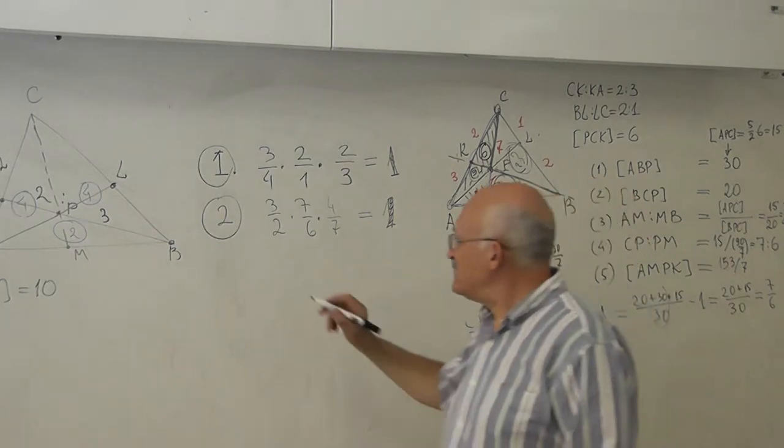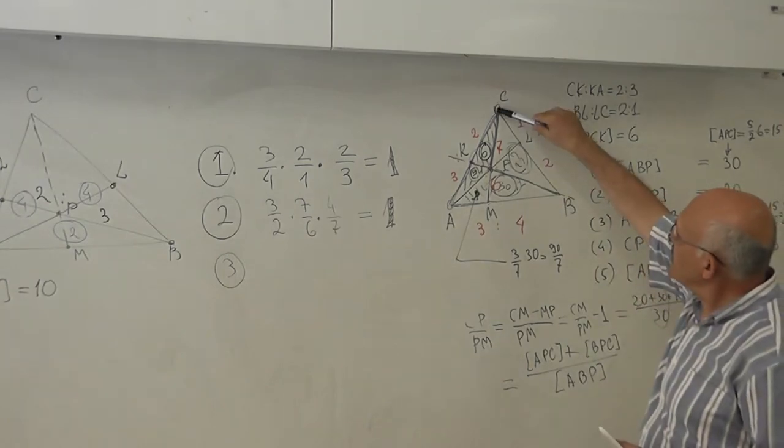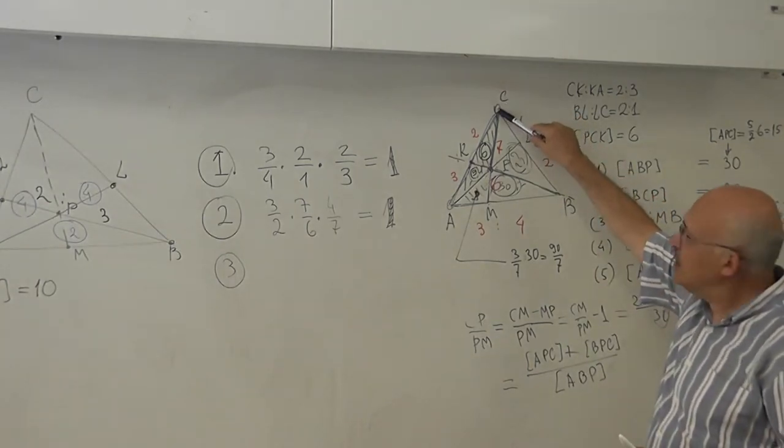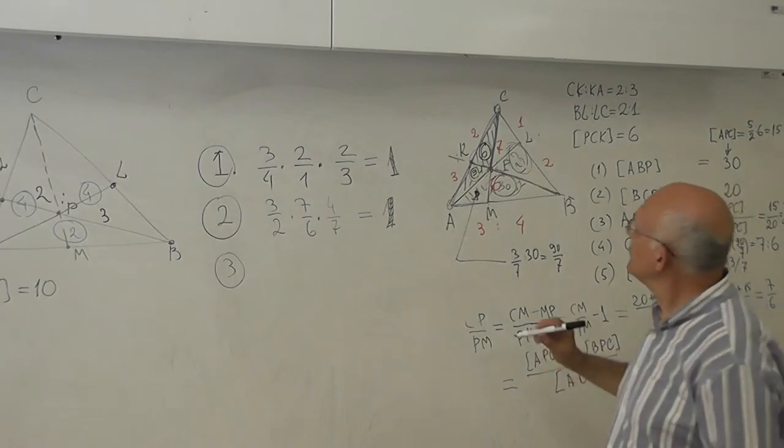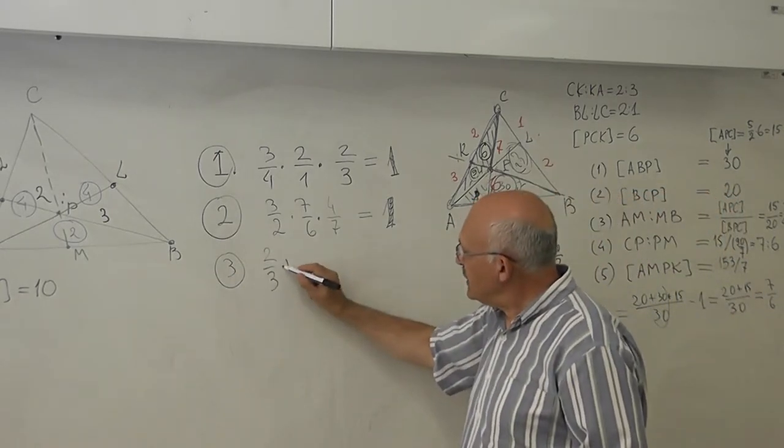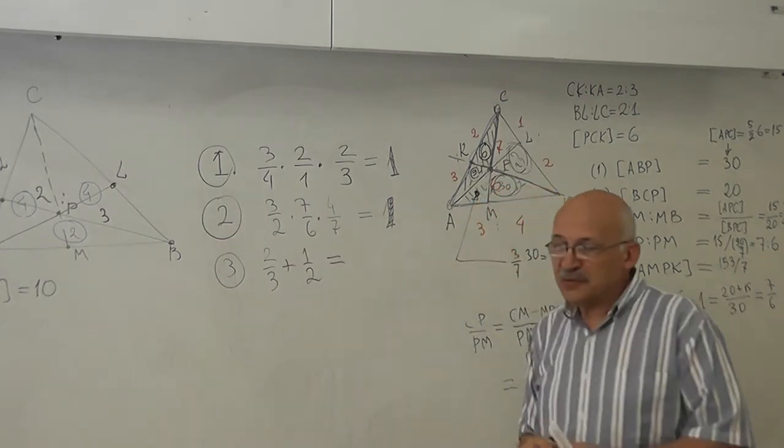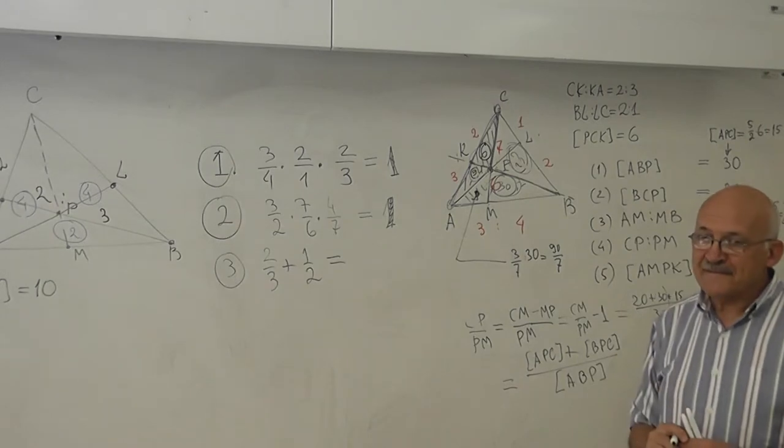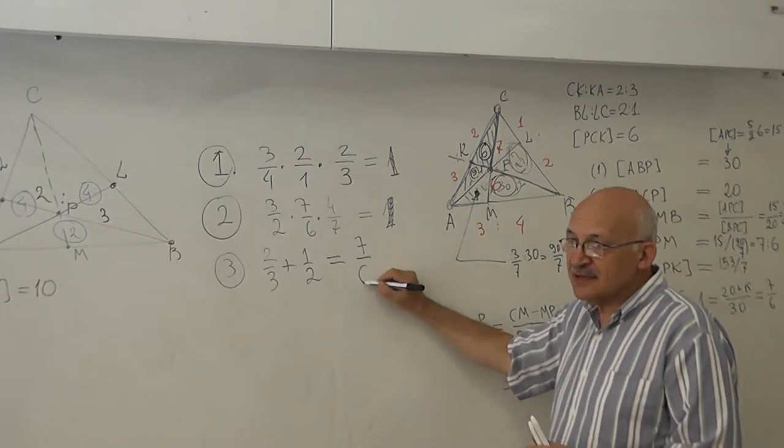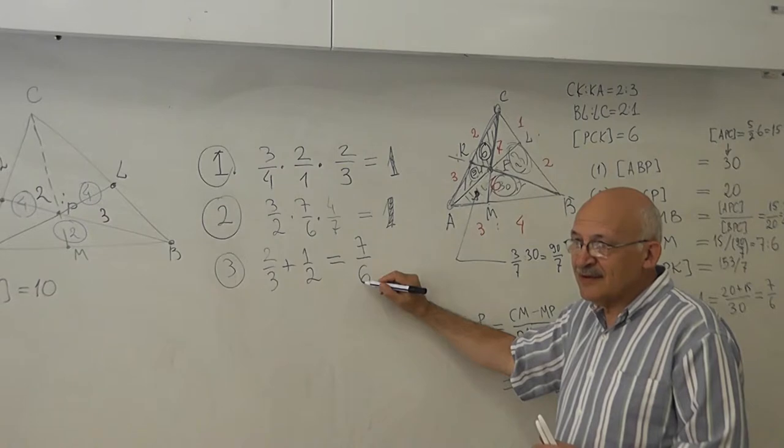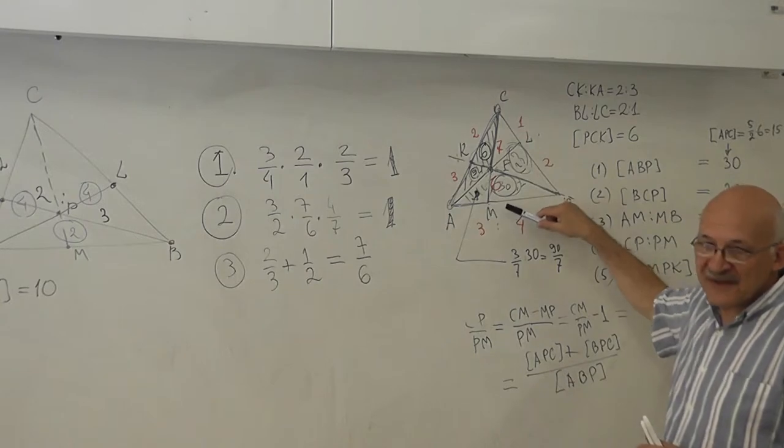Okay. Number three. Trick number three. I take, I take point C, for example. And I will take this ratio and this ratio and enter. Two to three plus one to two. Two. Two. Seven. Five. Two. Six. Seven to six, right? Yes. Seven to six. Yes.